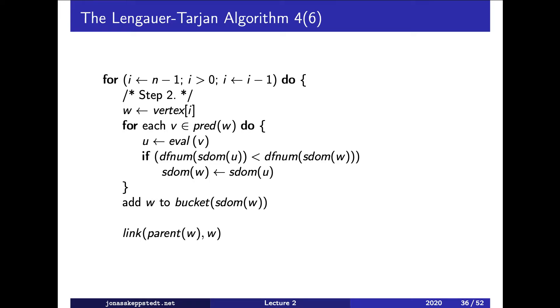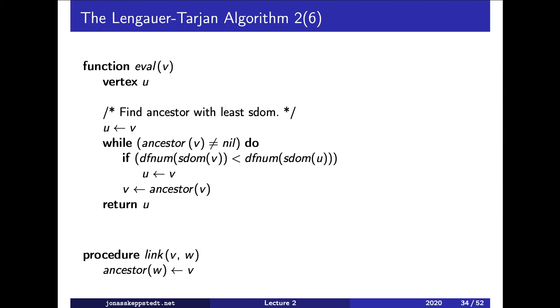Eval searches the ancestor links up and returns the ancestor with least semi-dominator, and link simply sets the ancestor which is actually a copy of the parent attribute.